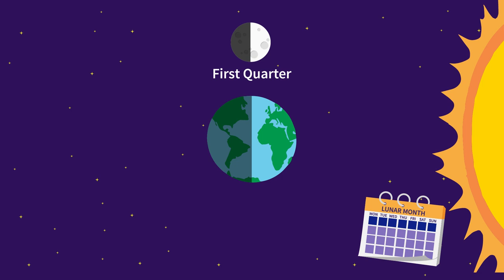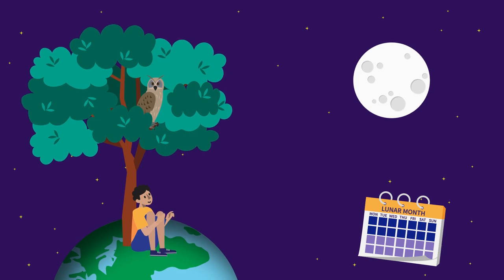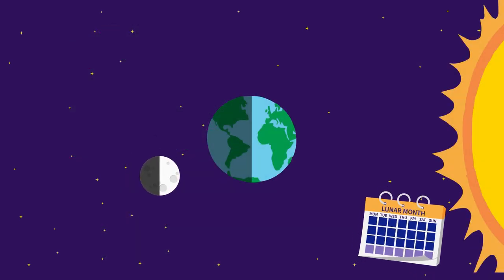After another week, all of the moon's lighted side faces Earth. This is called the full moon phase. In this phase, we are able to see a full moon.